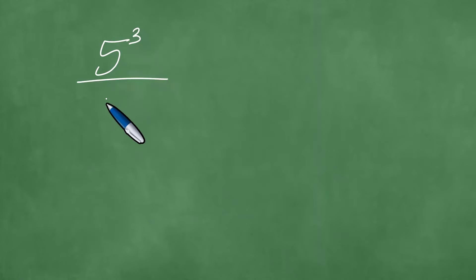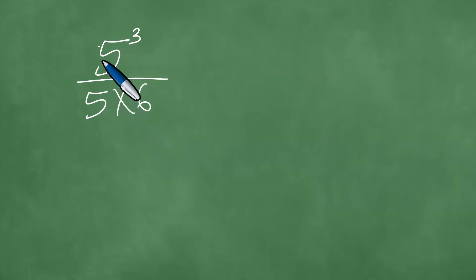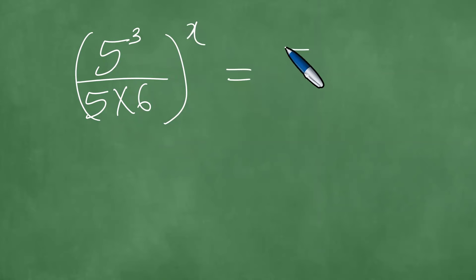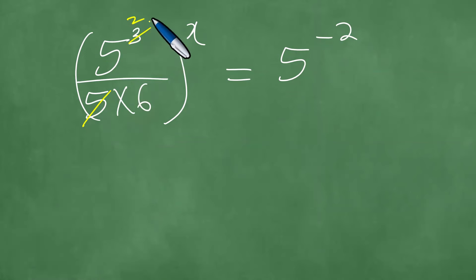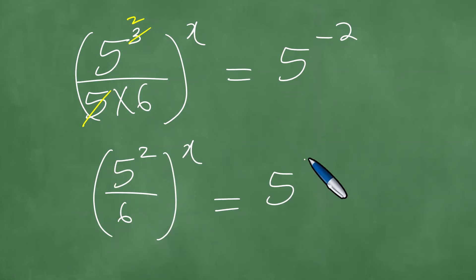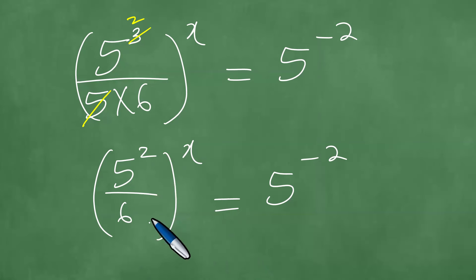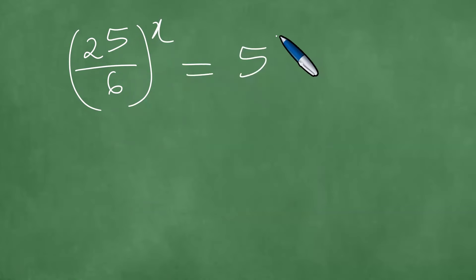We can write this as 5 cubed over 30, where 30 is 5 times 6, so we have 5 cubed over 5 times 6, all to the power x equals 5 to the minus 2. The factor of 5 in the numerator cancels one factor of 5 in the denominator, giving us 5 squared over 6, all to the power x equals 5 to the minus 2. Since 5 squared is 25, this becomes 25 over 6, all to the power x equals 5 to the minus 2.